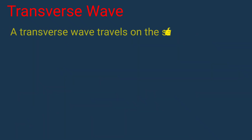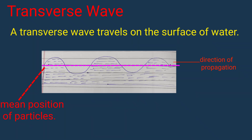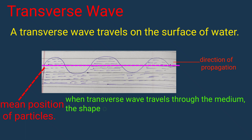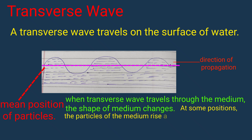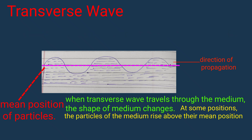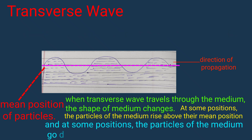A transverse wave travels on the surface of water. When transverse waves travel through the medium, the shape of the medium changes. At some positions, the particles of the medium rise above their mean position, and at some positions the particles of the medium go down below their mean position.